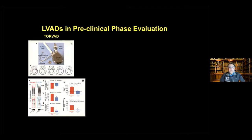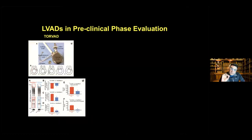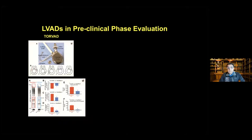One device in evolution is the Torvad pump, based on a windmill-like effect. Unlike the usual rotor, it has two moving pistons that move blood forward, requiring very low RPM — about 100 to 150 RPMs instead of the 5,000 to 6,000 RPM of current generation devices. This is believed to cause lower stress to circulating blood elements, probably reducing bleeding complications. This device is also designed to be synchronous with pulsatility, and is still very much in preclinical development.